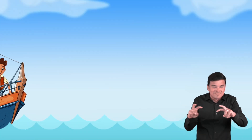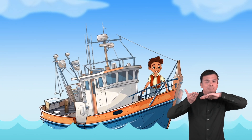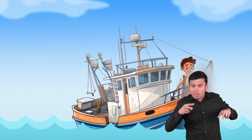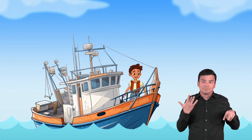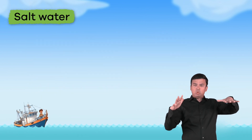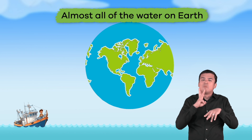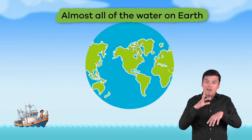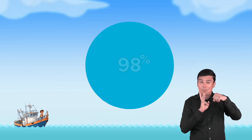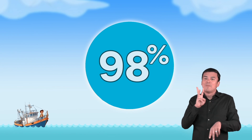Now that we are cruising on the ocean, let's observe some of its characteristics. First off, oceans are huge. The ocean is made of salt water and contains almost all of the water on Earth — around 98% to be more precise. Wow, that is a lot of salt water.